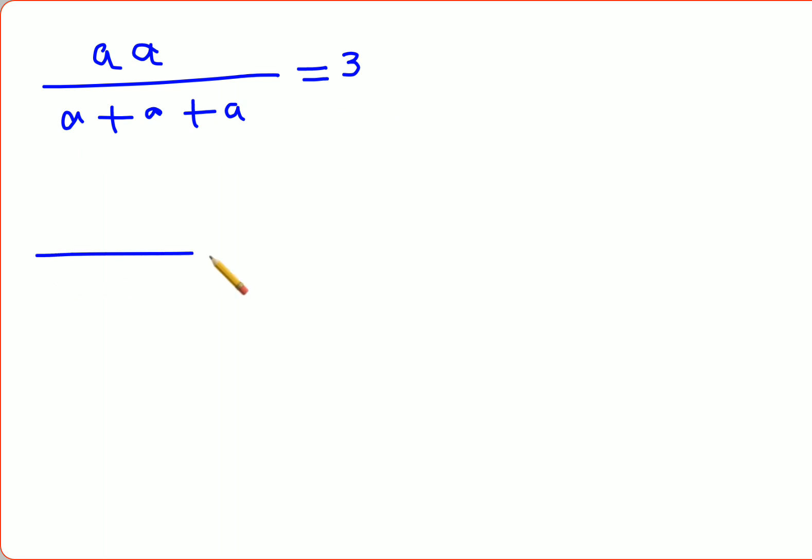First, when you have nothing written in the index, it is basically 1. And a raised to m times a raised to n can be written as a raised to m plus n. So this eventually comes out to be a raised to 1 plus 1. In that case, I can directly write this as a squared, and a plus a plus a in the denominator.